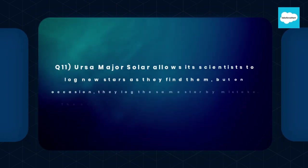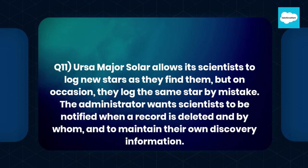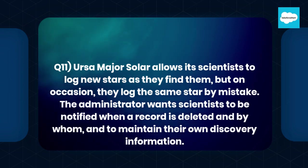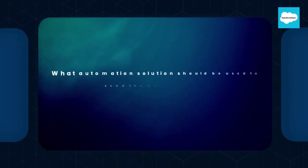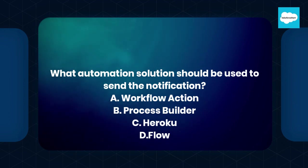Question number 11. URSA Major Solar allows its scientists to log new stars as they find them, but on occasion they log the same star by mistake. The administrator wants scientists to be notified when a record is deleted and by whom, and to maintain their own discovery information. What automation solution should be used to send the notification? A. Workflow Action. B. Process Builder. C. Heroku. D. Flow.